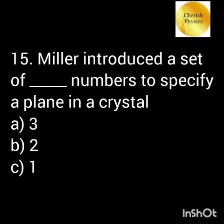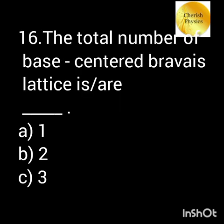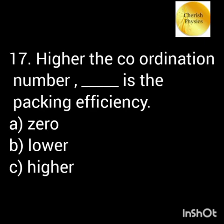Miller introduced a set of three numbers to specify a plane in a crystal. The total number of base-centered Bravais lattices is 2. Higher the coordination number, greater the packing efficiency.